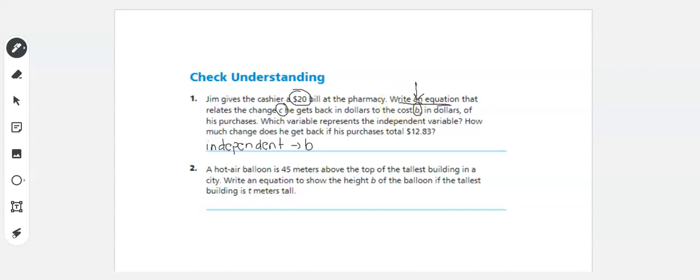And we need to write our equation here. So we need to figure out how much we're going to get back. So C equals 20 minus B because if I give him $20, and then what I get back is minus whatever the cost is.